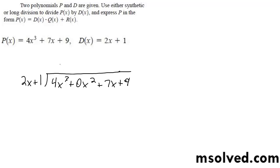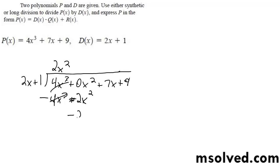So 2x goes into 4x cubed — 2x squared times. Multiply that, so we get plus 2x squared. Switch signs, minus, cancels out. We get negative 2x squared plus 7x.